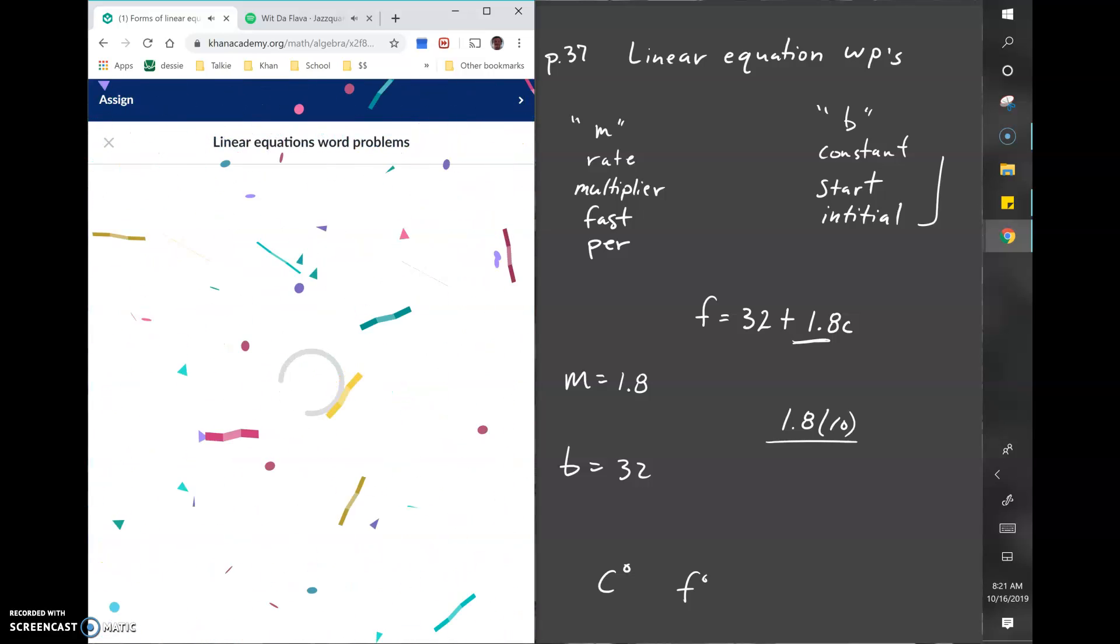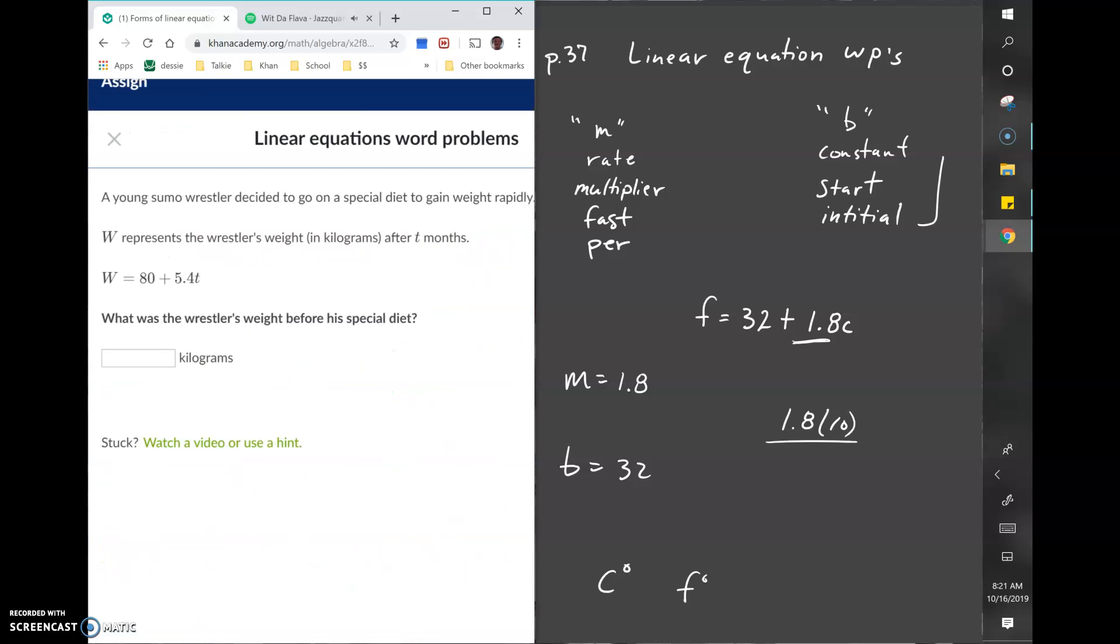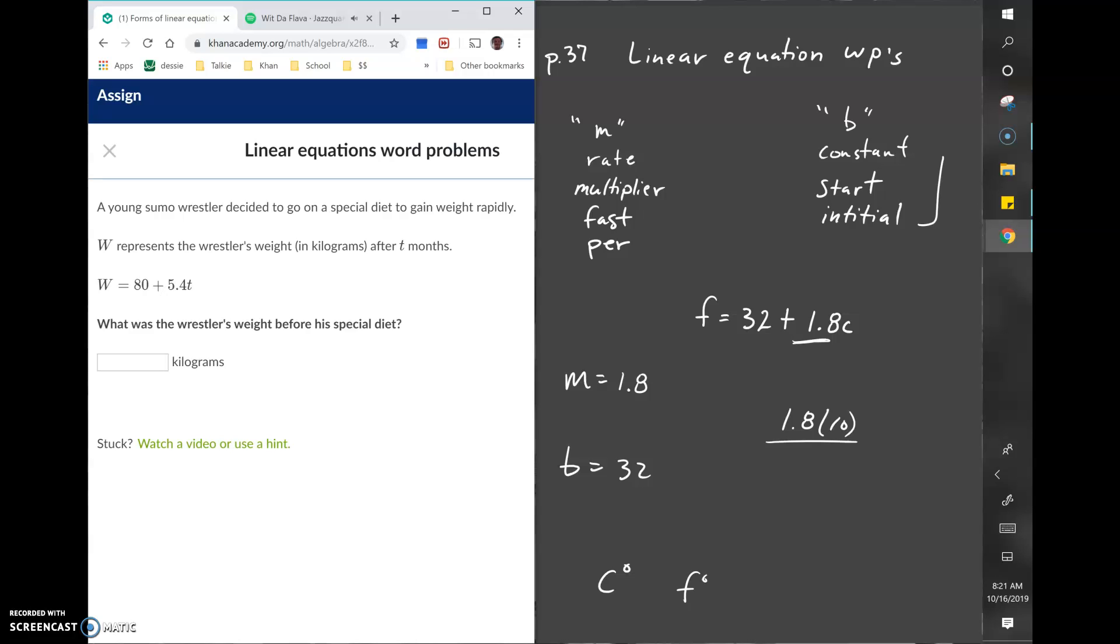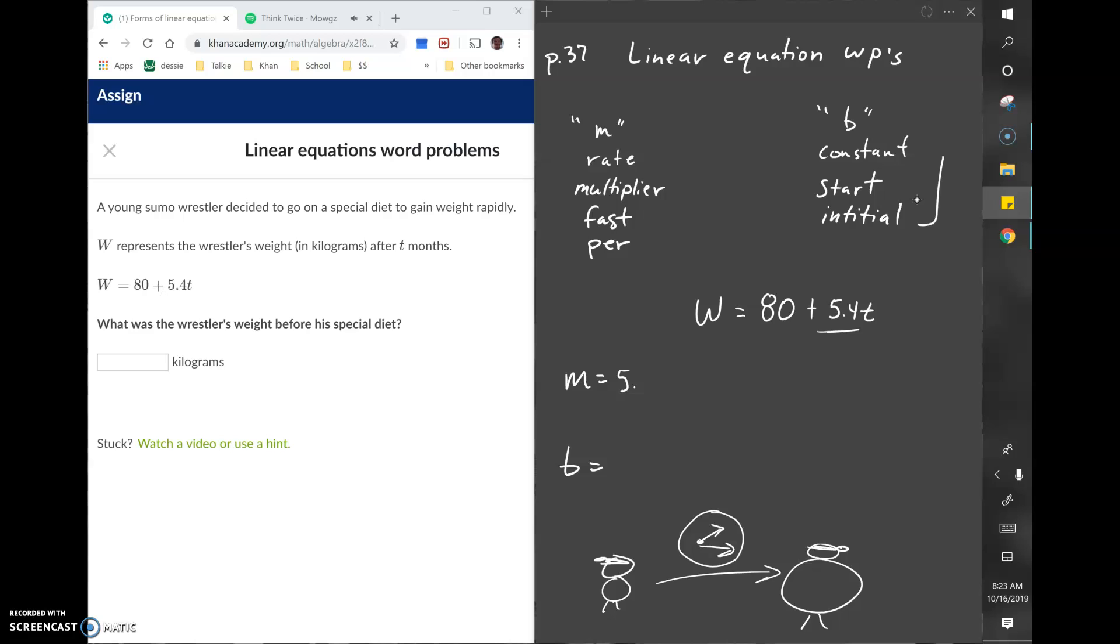Pause the video and see if you can identify what the slope and B value are. If you said the rate was 5.4, you're correct, which makes the constant or B value 80. That 5.4 represents 5.4 kilograms per one month.